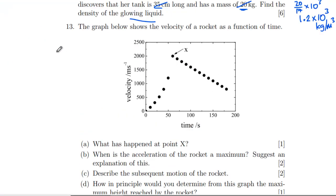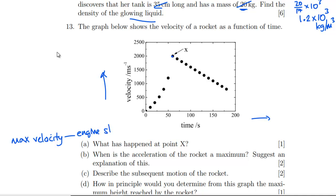Question 13: the graph shows the velocity of a rocket as a function of time. What has happened at point X? The velocity is increasing, all positive, then reaches some maximum velocity, followed by a constant negative acceleration. Point X is the maximum velocity — most likely when the engine stops, because if the engine were still running you'd expect velocity to keep increasing.